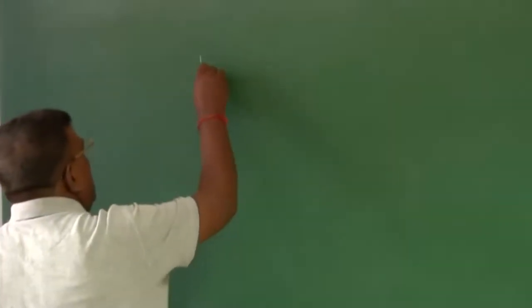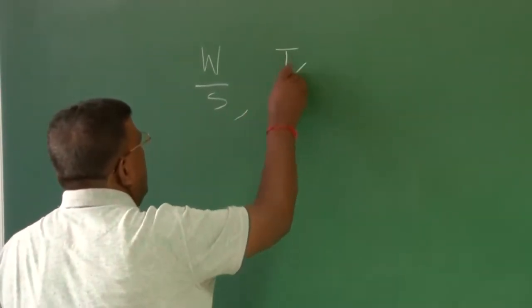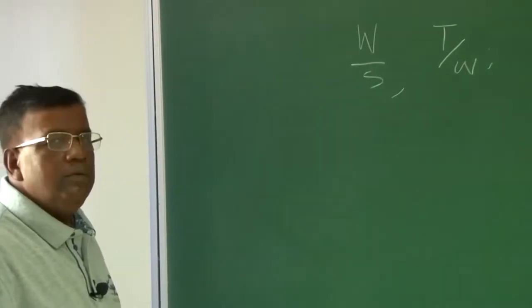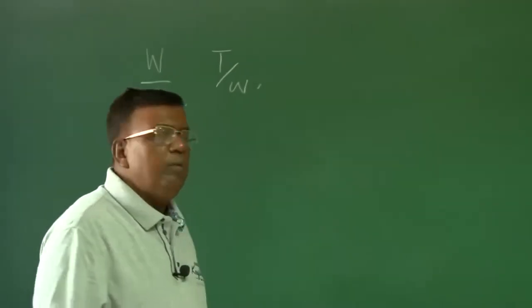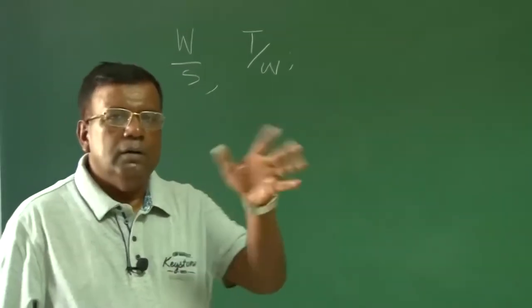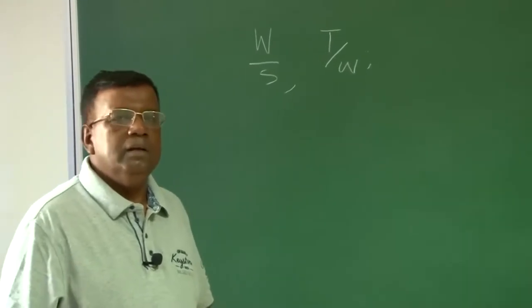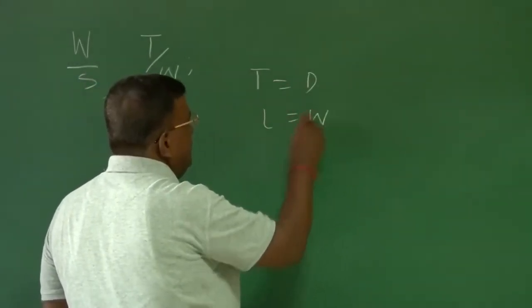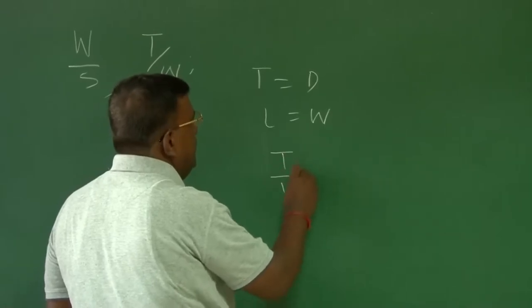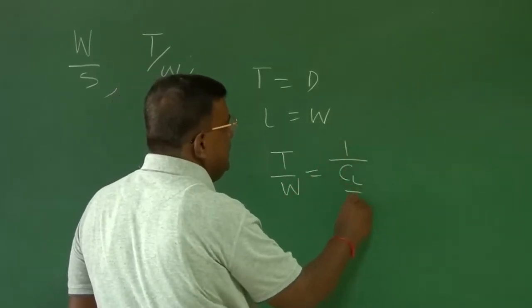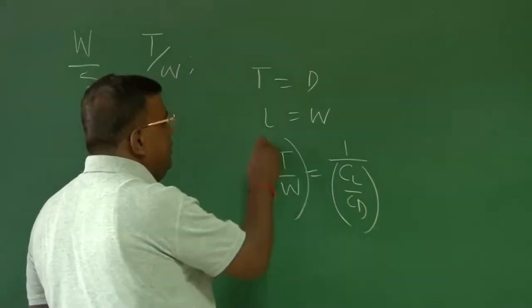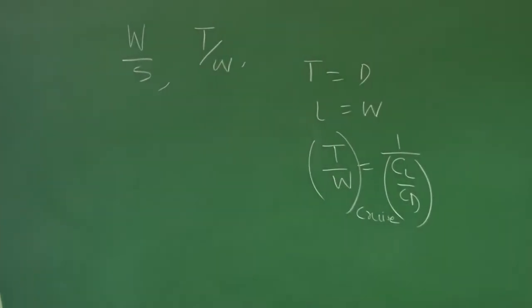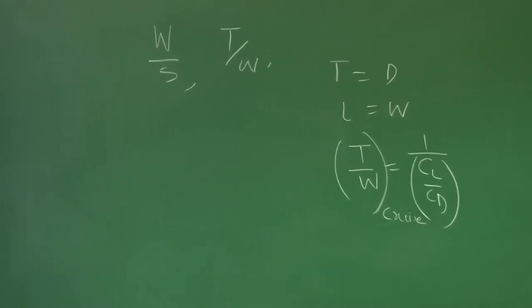We have been talking about W/S and T/W. When it comes to T/W, how much T/W is required for a normal cruise-dominating airplane? If I want to see that, I know that T equals D and L equals W, which means T/W equals 1 divided by (CL/CD). So if I write T/W cruise equal to 1/(CL/CD), what is the T/W required for cruise?